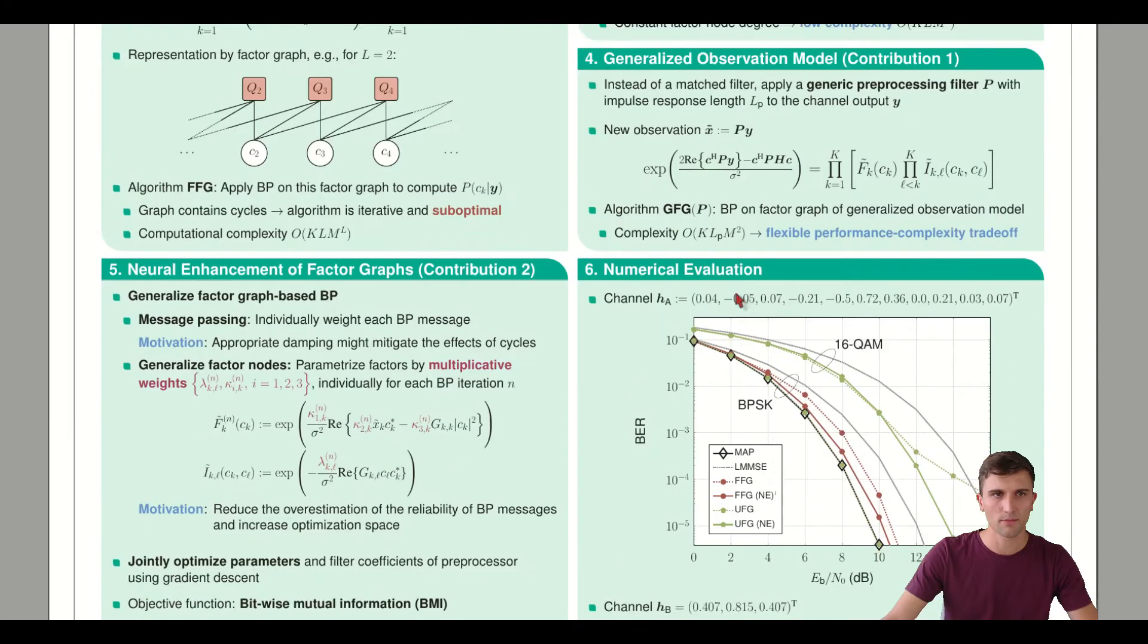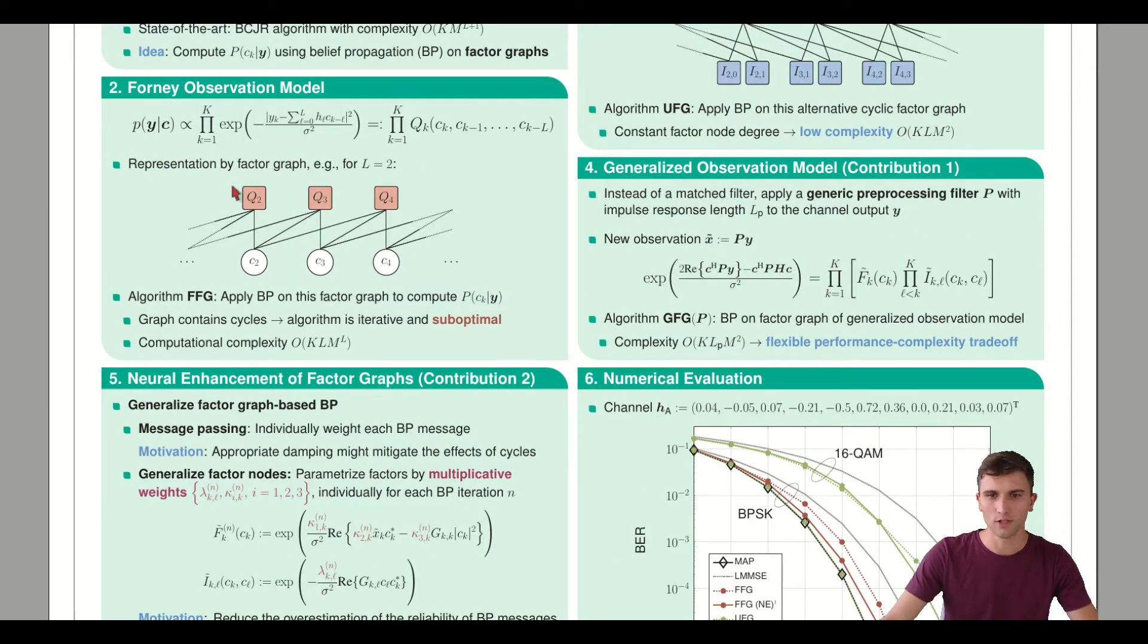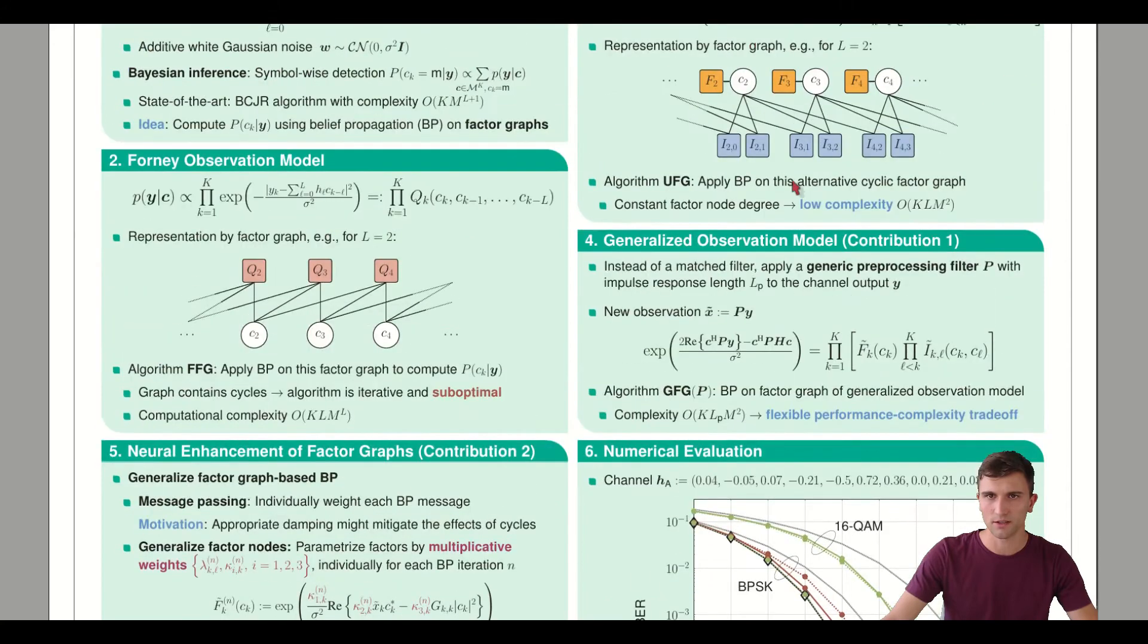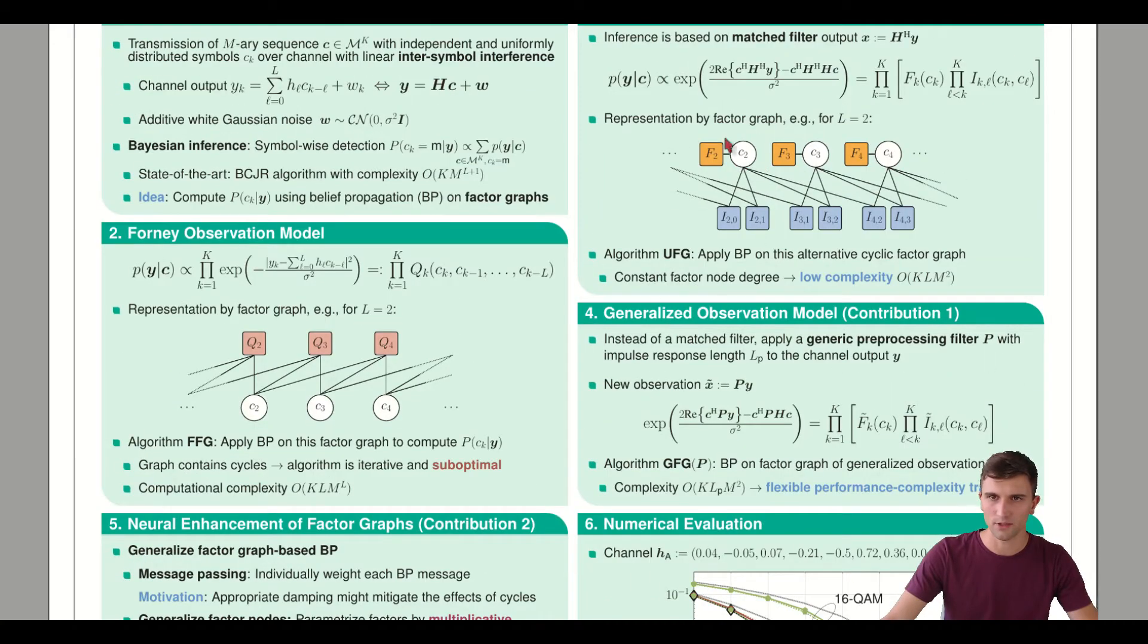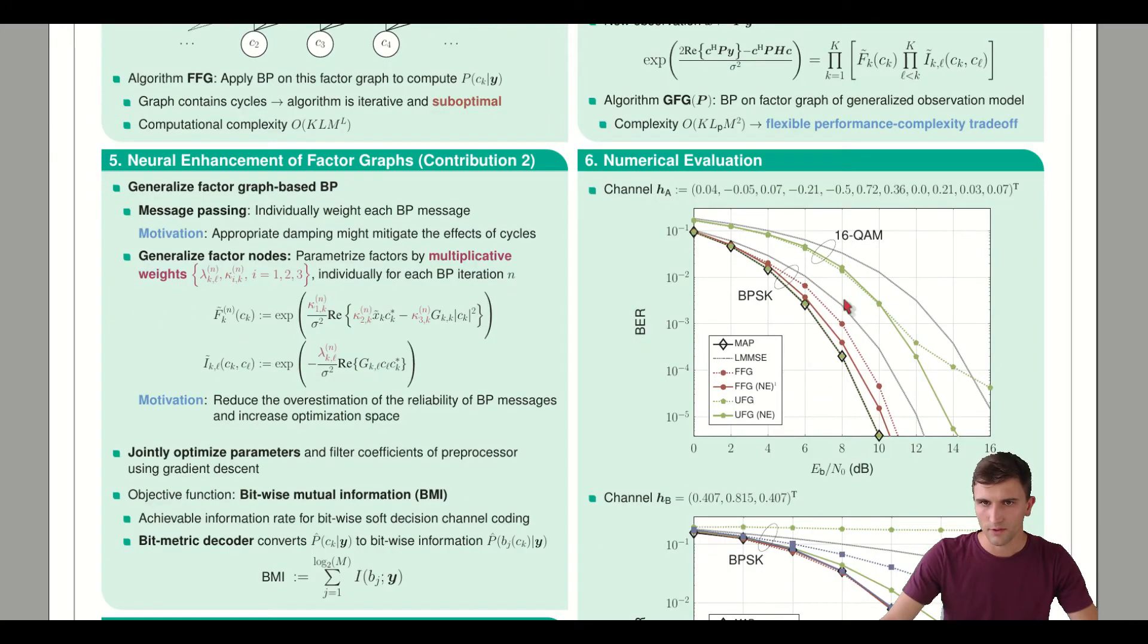Here you can see the bit error rate for two different channels. The FFG algorithm is the belief propagation based on the Forney observation model, and the UFG is based on the Ungerberg model. For this first channel, the Ungerberg model in green has quasi-optimum performance. We can't see any gap between the green performance and the MAP performance. On the other hand, the Forney model in red shows a significant gap.